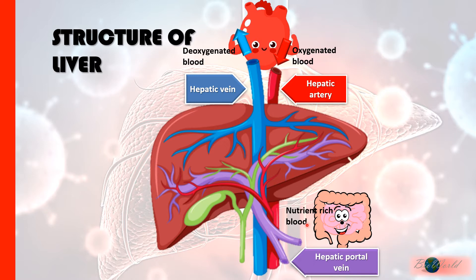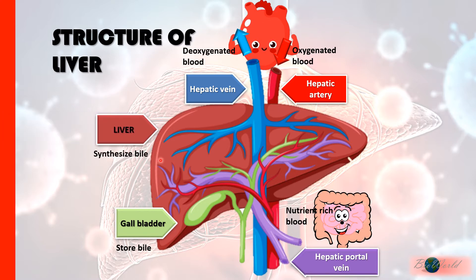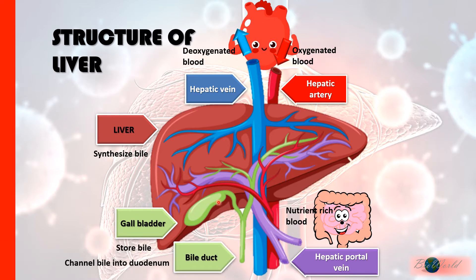The blood from the ileum will be rich in glucose and amino acids. The next important structure in the liver is the gallbladder. The gallbladder only stores bile — it doesn't synthesize bile. It is the liver cells that synthesize bile, and the bile is then transported into the gallbladder for storage. The gallbladder then releases the bile and channels it into the duodenum via the bile duct.